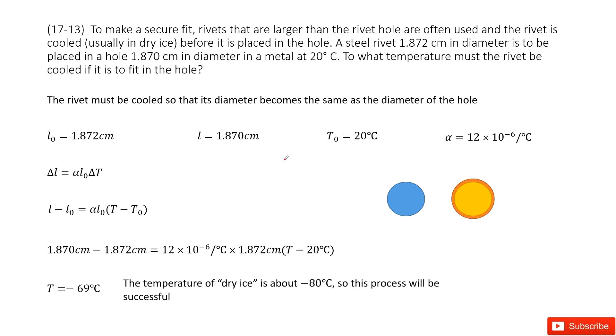For these problems, we can see there we have a very smart technology to make a very good fit for the rivet and the hole. You can see at room temperature 20 degrees, the diameter for our rivet is L0. The diameter for the hole is L, this one.